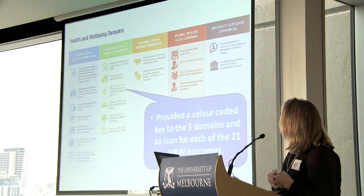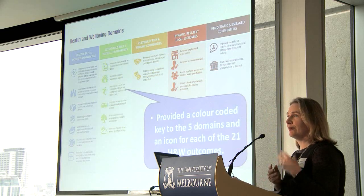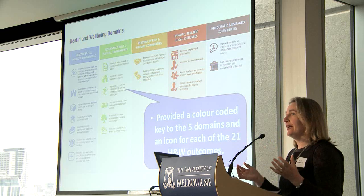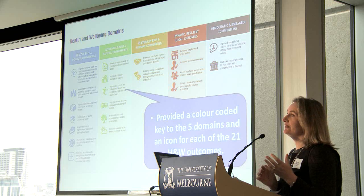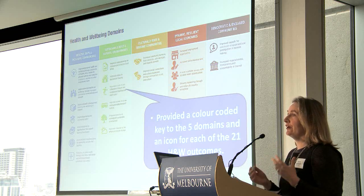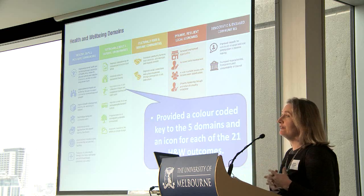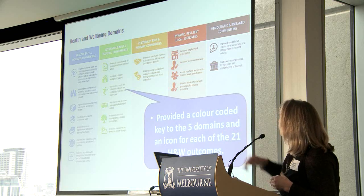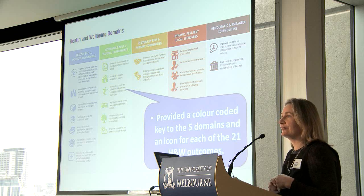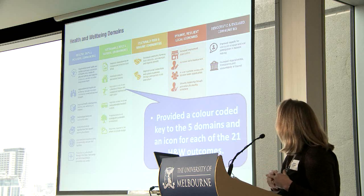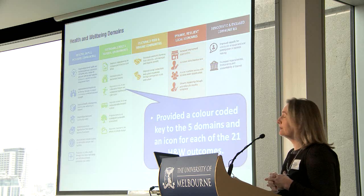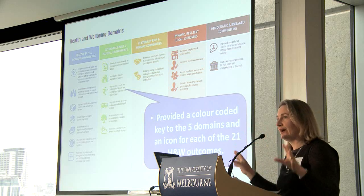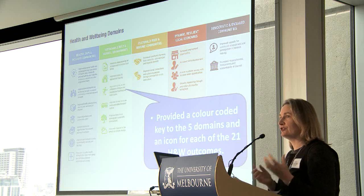We've taken directly from the CIV framework and produced a table showing the five domains under which our health and wellbeing outcomes are listed. Within each domain we have a little icon next to our health and wellbeing outcomes we're hoping to achieve — about 21 in total — and those icons are scattered throughout the document against each of the strategies.